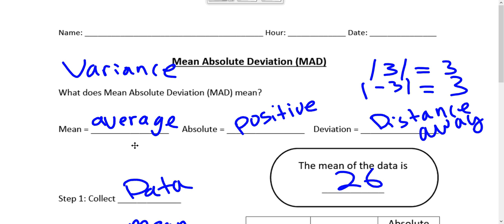This goes along with our notes page. So what does MAD mean? Well, mean is an average.